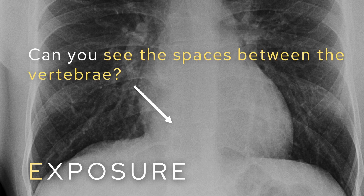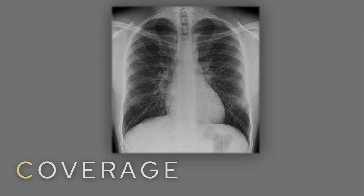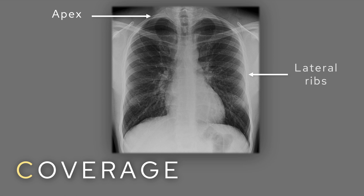Moving on to E for exposure. The most important thing is to be able to see the spaces between the vertebrae — if you can, the film is adequately exposed. This matters because if the vertebrae aren't clearly visible, you won't be able to comment on pathology behind the heart, which is a critical review area. Finally, C is for coverage. There are three things to check: first, the lung apex and first rib; second, all lateral ribs; and third, the costophrenic angles. If all three are included, there is adequate coverage of the film.